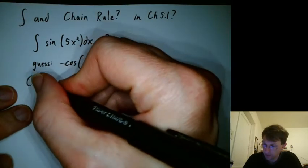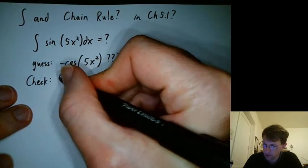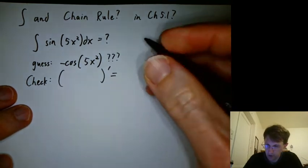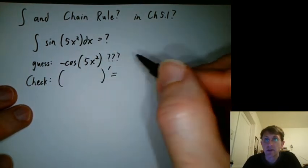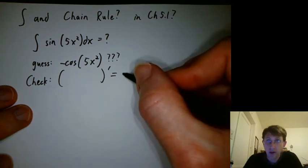Check it. So what's the derivative of all that? Go ahead and take the derivative of negative cosine 5x squared. Okay, are you back?